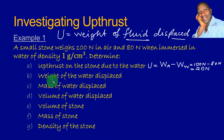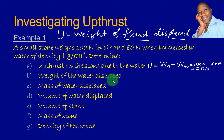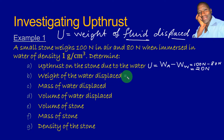Now let's go ahead and calculate the weight of the water displaced — that is, the weight of the fluid displaced. We simply need to go back to Archimedes' principle: up thrust is equal to weight of fluid displaced. So the weight of the water displaced will be equal to the up thrust, which we have seen is 20 N.